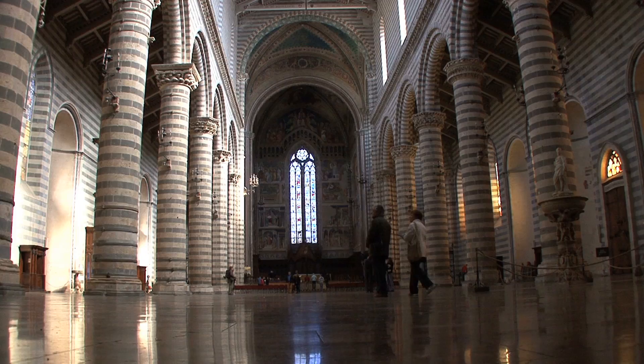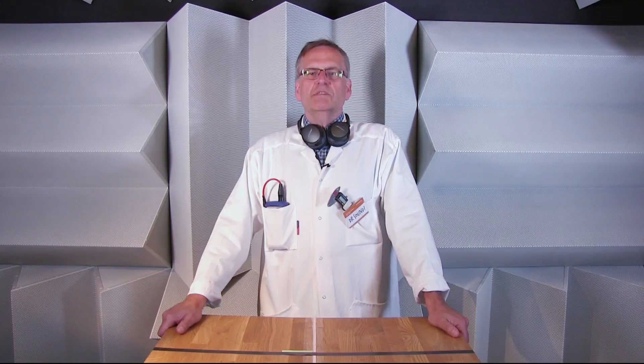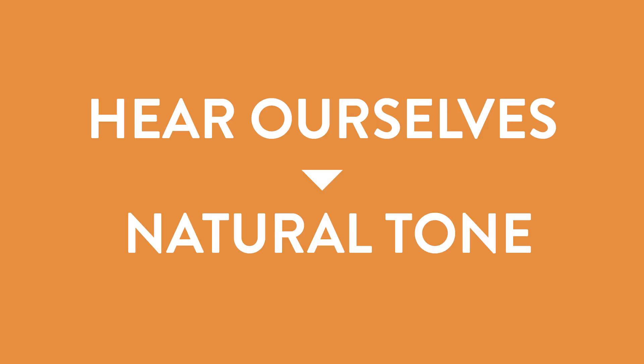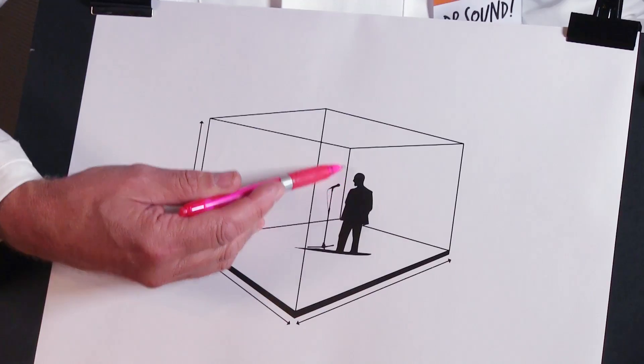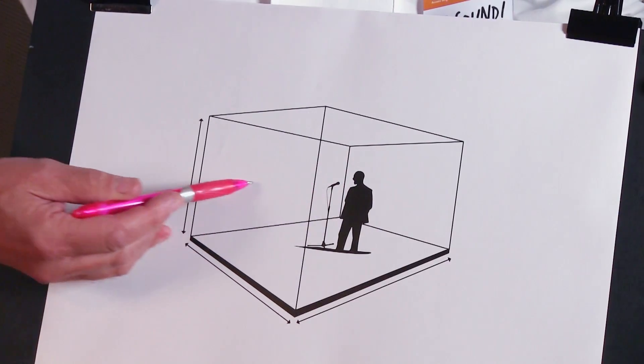We all know what echo is — it's what we hear in a big cold room. When we speak, the sound of our voices travels directly through the air, but some even passes through our skulls on the way to the air. This is what we call sidetone in a telecom context. Even though our sensitivity to this sound is extremely low, it's very important for us since we need to hear ourselves to be able to speak in a natural tone. The sound of our voices also goes out into the room, bouncing against walls until returning to our ears.